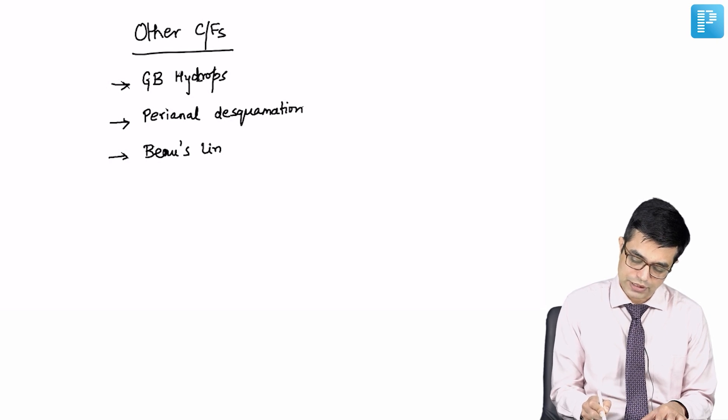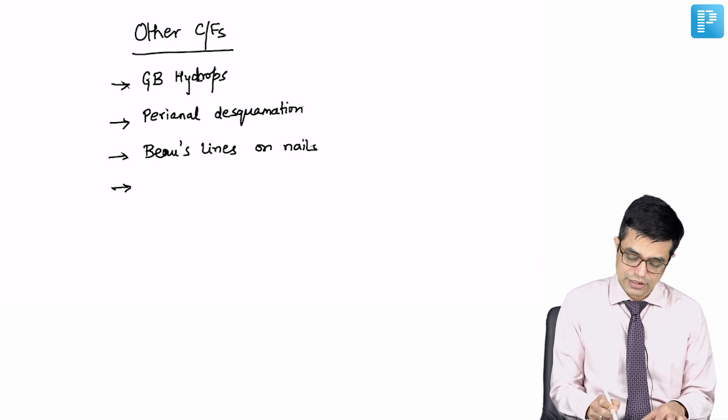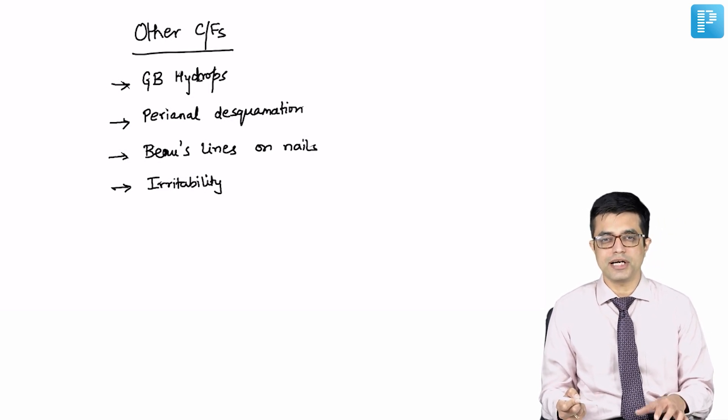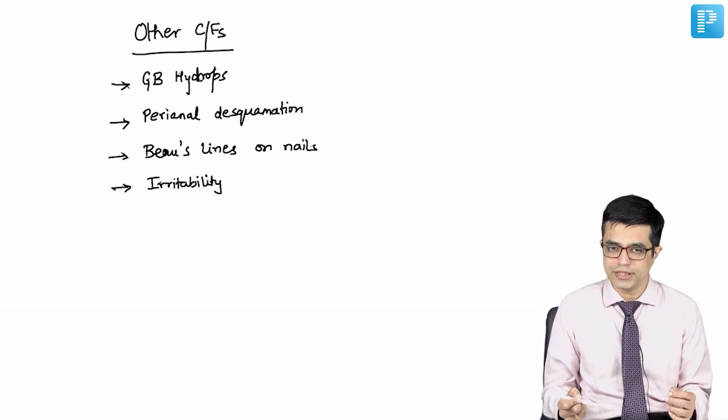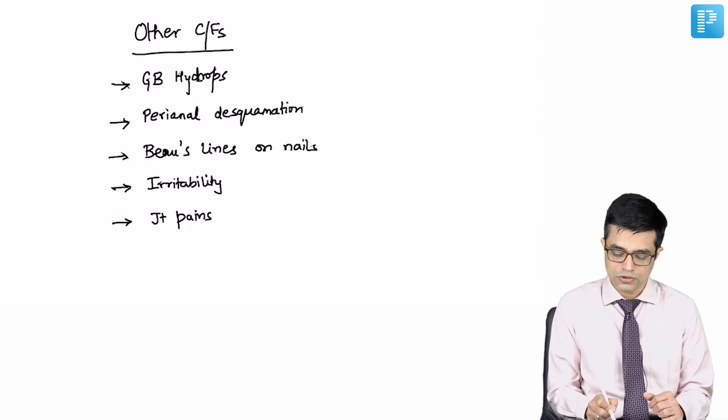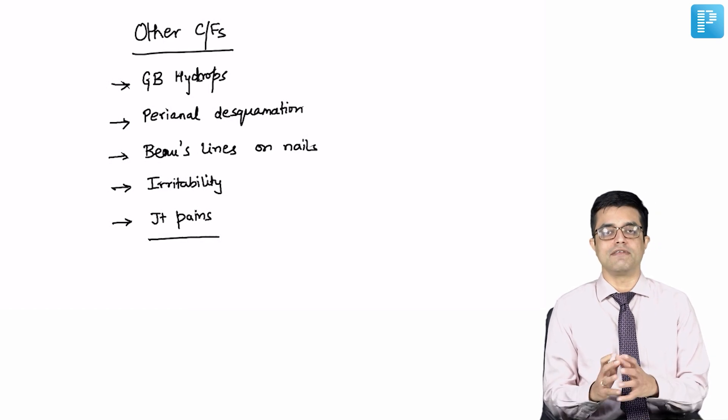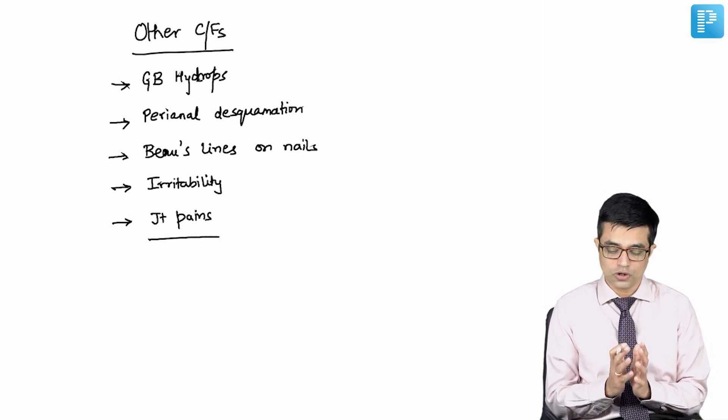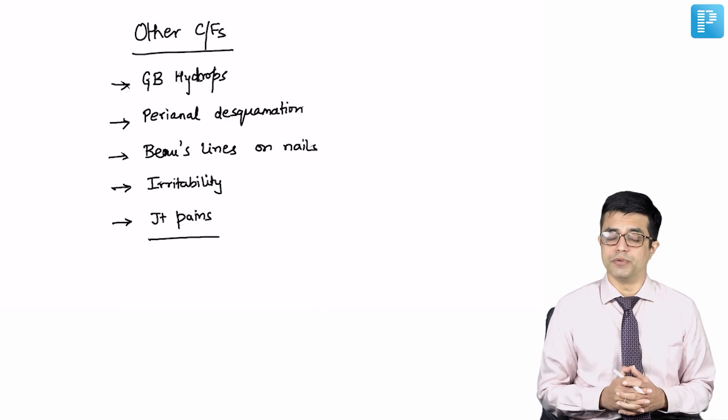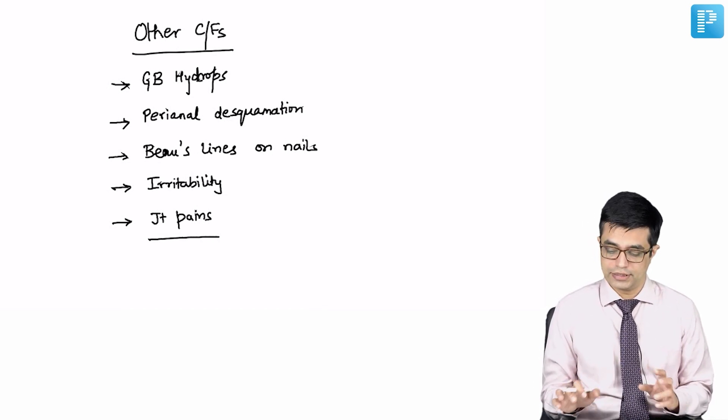Third, these children have lines known as Beau's lines present on the nails. Kawasaki disease children are irritable, so irritability without any other manifestation may sometimes be seen. The child is toxic, so he or she is irritable. Lastly, joint pains which may be arthritis or self-limiting arthralgia are also frequently seen. These are the other common clinical features, but remember they are not the cardinal features of Kawasaki disease.